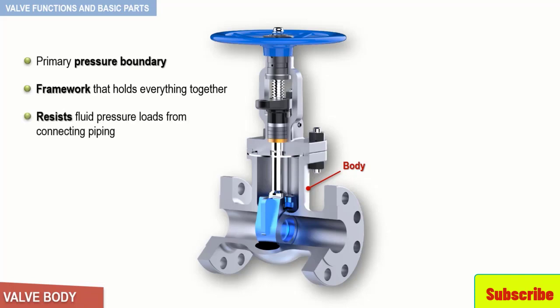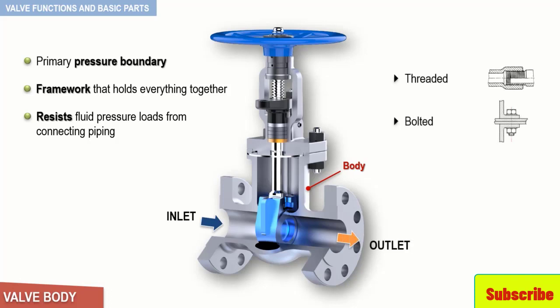It receives inlet and outlet piping through threaded, bolted, or welded joints. In our example, the piping is connected to our valve through bolted flanges.